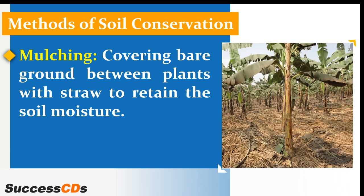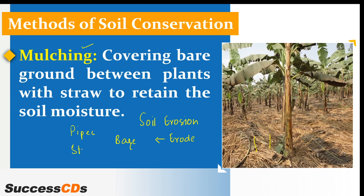Methods of soil conservation include mulching, where we cover barren land with pipes or straws so that soil moisture is retained. Contour barriers involve placing stones on hill slopes so that soil is not washed away quickly. Rock dams are built to stop rushing water from washing away soil, acting as a barrier to keep soil intact.